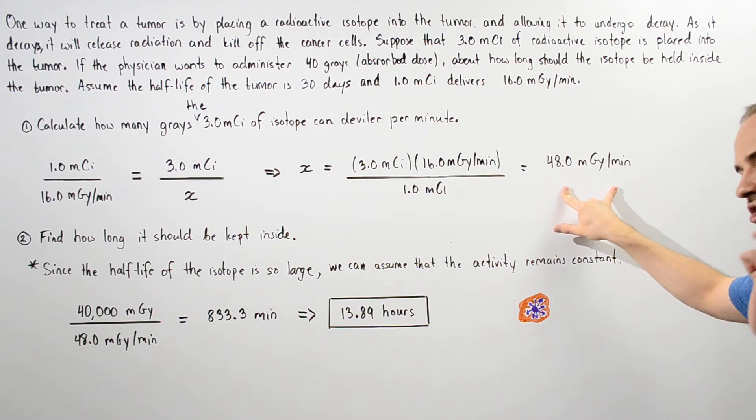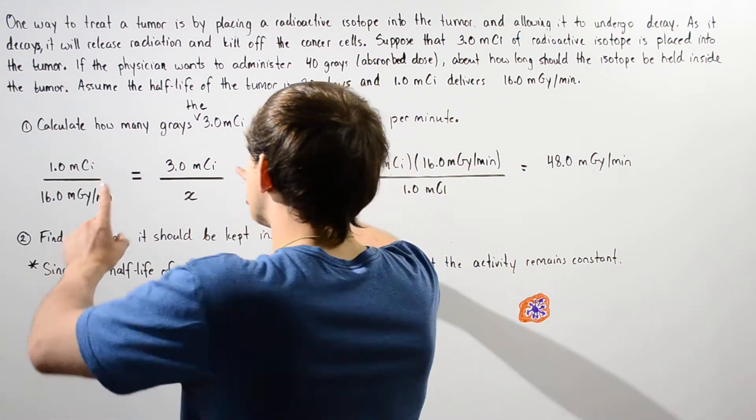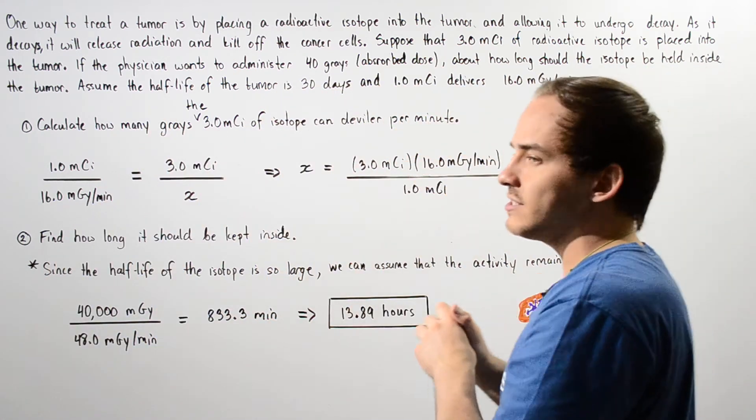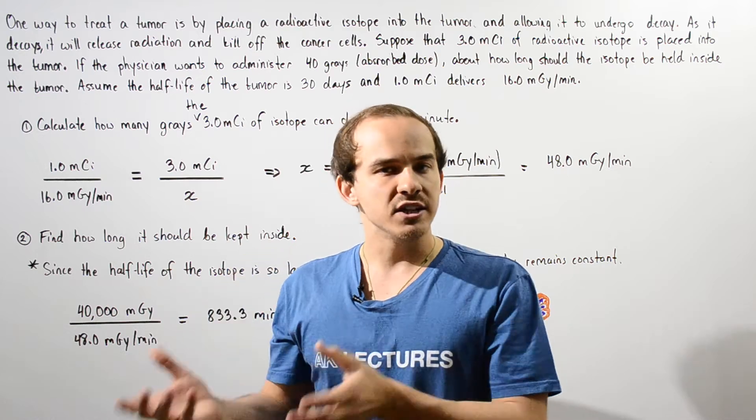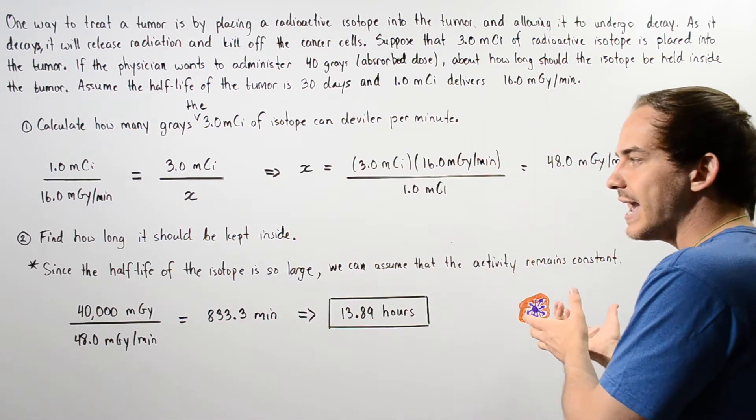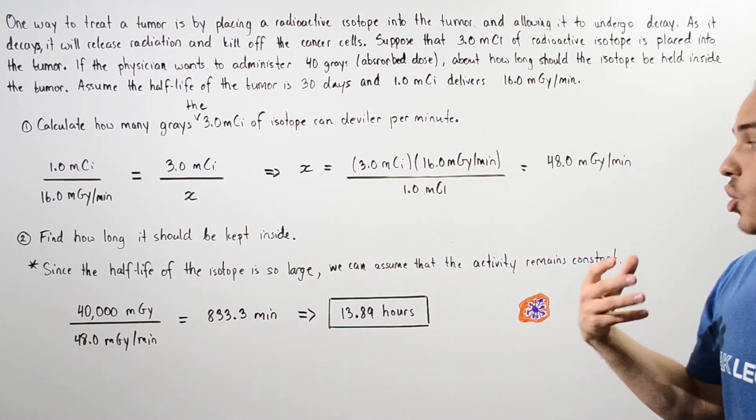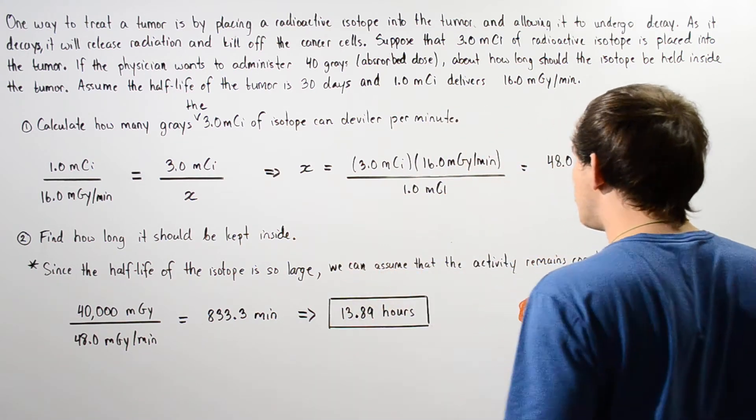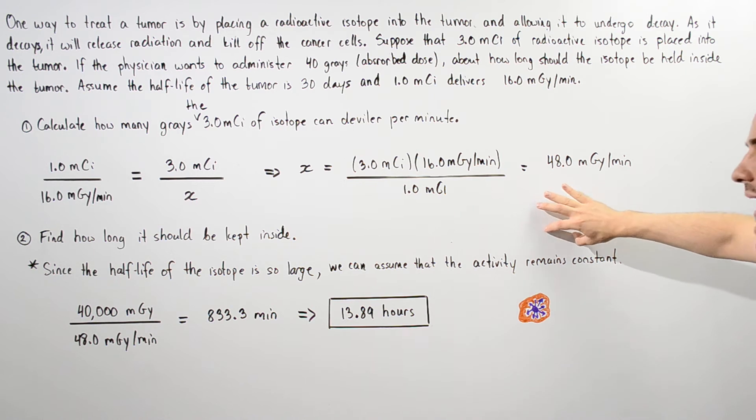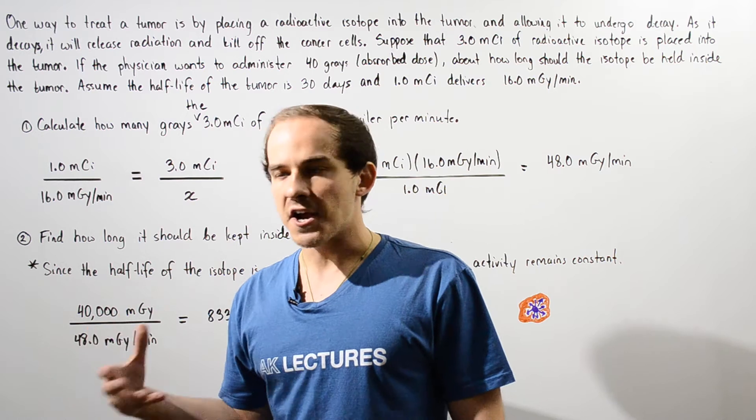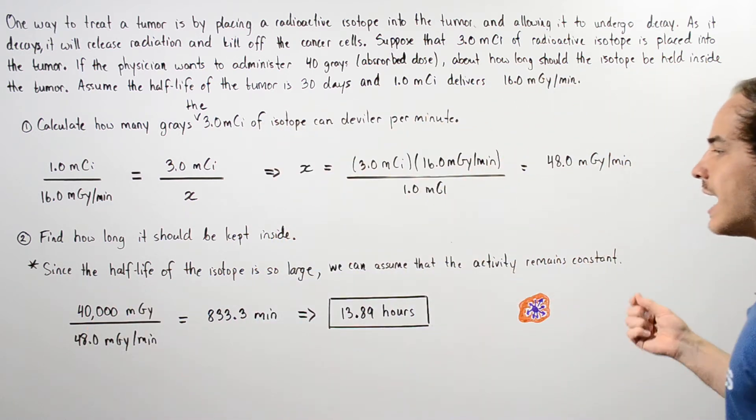In part two, we're going to make an important assumption. Notice that the half-life of this particular radioactive isotope is relatively large. It's 30 days. And since the half-life of the isotope is so large, we can assume that the activity remains constant. The activity doesn't really decrease by a very large amount. It remains constant.